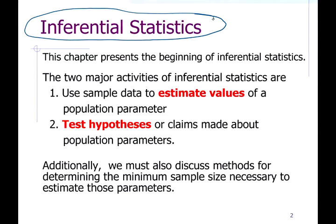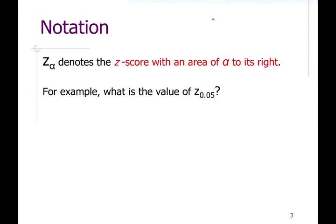One piece of information we're going to need to calculate in this context is z-scores based on probabilities or areas. Notation-wise, z sub alpha denotes the z-score with an area of alpha to the right.